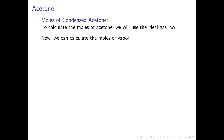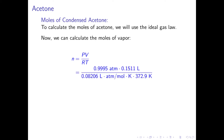We are now in a position to calculate the number of moles of vapor. The ideal gas law can be rearranged so that the number of moles equals pressure times volume divided by the gas constant times the temperature. For our data: 0.9995 atm times 0.1511 liters, divided by 0.08206 liter·atm per mole·Kelvin times 372.9 Kelvin, giving 4.935 × 10⁻³ moles.